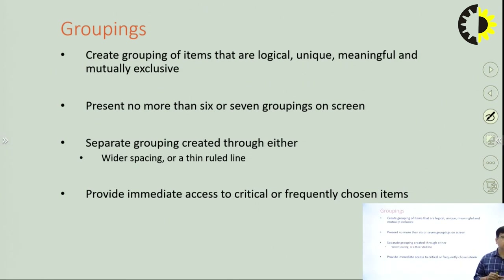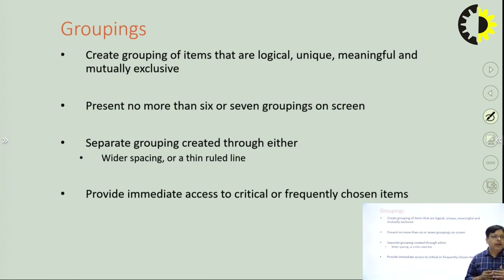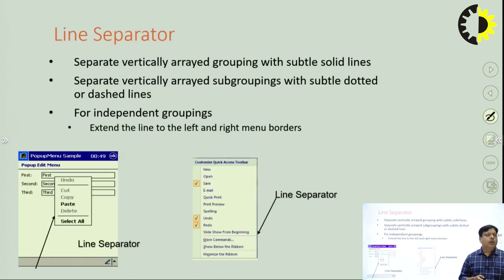Present no more than 6 to 7 groupings on screen — this is important. It does not mean that having the flexibility of grouping allows you to place all information in a single menu; only 6 to 7 subgroupings must be limited in a menu. Separate groupings should be created through either wider spacing or a thin ruled line. Grouping elements should be separated with a particular scheme so that the user feels comfortable. Lines are used as separators so users can understand where one group ends and the next begins.